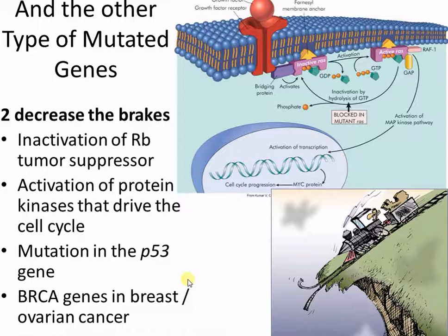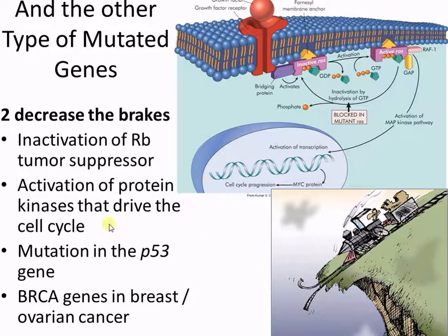Another important tumor suppressor is BRCA, which is associated with breast cancer and ovarian cancer. About 60% of tumors are actually related to P53 breakdown.